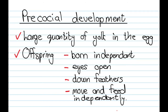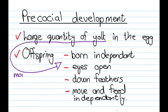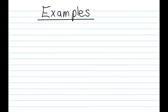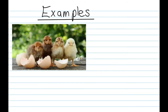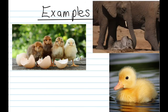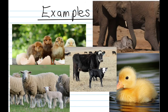Now remember, these two things actually have something to do with each other. The large amount of yolk in the egg means that there's more time for development before the egg is hatched, which means that the organism is stronger. Examples don't just include birds like chickens and ducks, but also things like elephants, cows, and sheep.